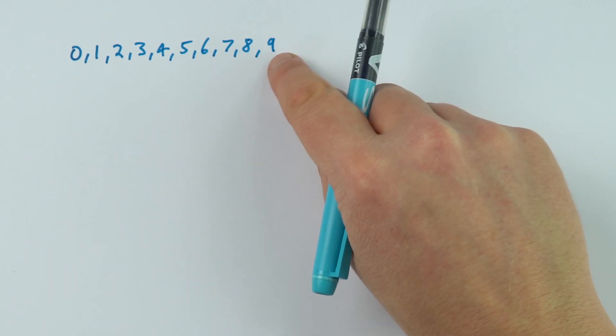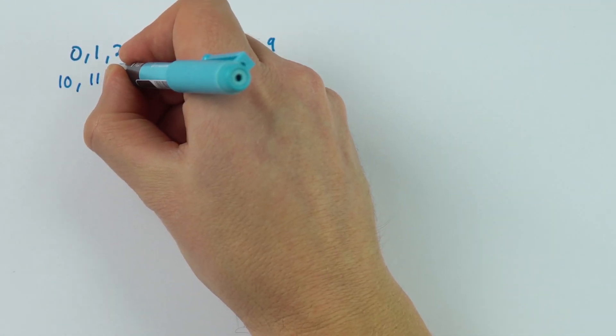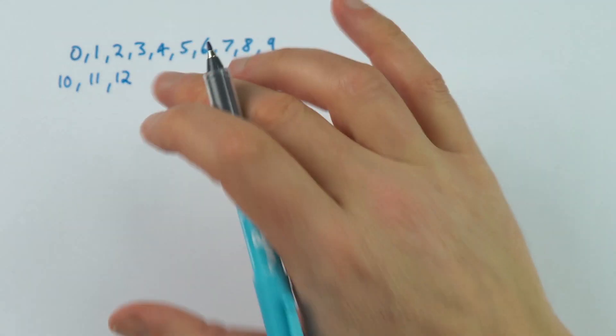If we want to have a number bigger than 9, we need to add another figure, so then we'd have 10, 11, 12, and so on. You should be familiar with that by now.